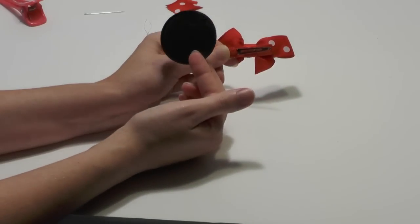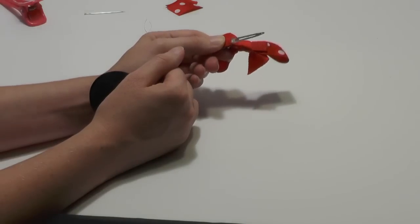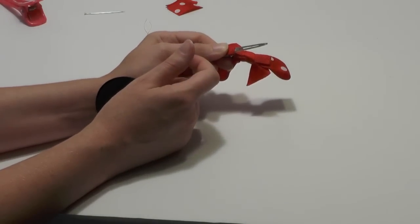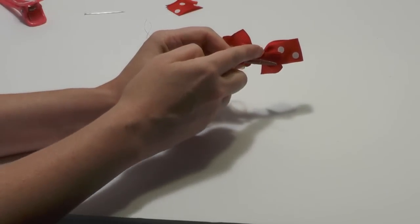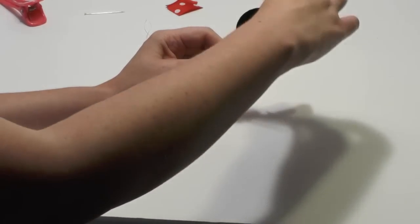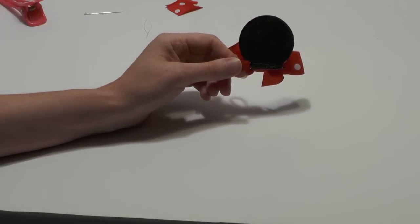To add the black felt ear, you're just going to pry open your clip. You're going to add a little glue right here to the top back of your clip, and you're going to place your ear just like that. It's going to look like that from the back.